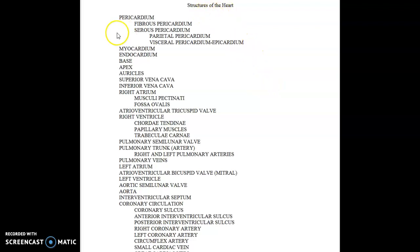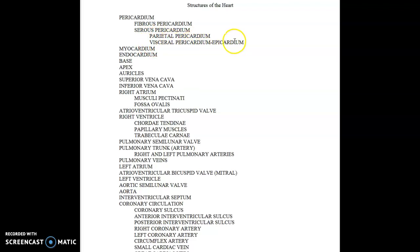Looking at this, we have structures of the heart. The first thing we have is the pericardium, which is divided into the fibrous pericardium and the serous pericardium. The serous pericardium is further divided into the parietal and the visceral pericardium, and the visceral pericardium is also known as the epicardium. Let's look and see what that would look like.